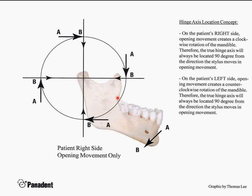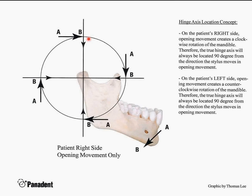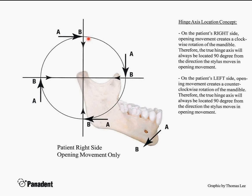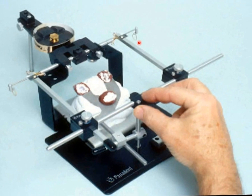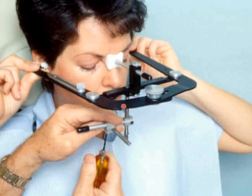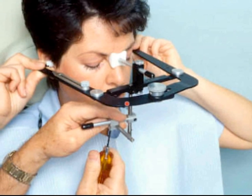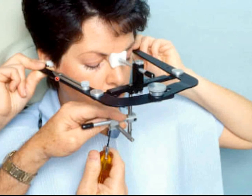We can locate and mark the hinge axis on the skin and transfer that to the true hinge axis on the articulator. We can also use a face bow, which uses a statistical average by using the ears. Research has calculated that the average axis is about 10 to 12 millimeters forward and 6 to 10 millimeters down from the auditory meatus. About 75% of the time you'll be within 5 millimeters of a true hinge axis — meaning 25% of the time you'll be off by more than 5 millimeters. This is accepted as adequate for most procedures when minimal to moderate dental changes are required.